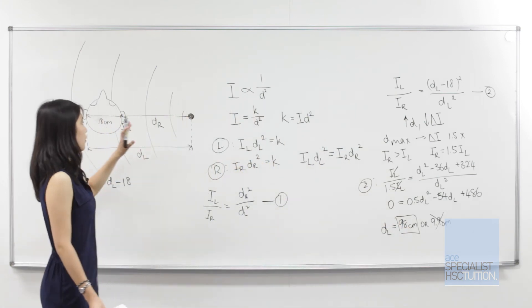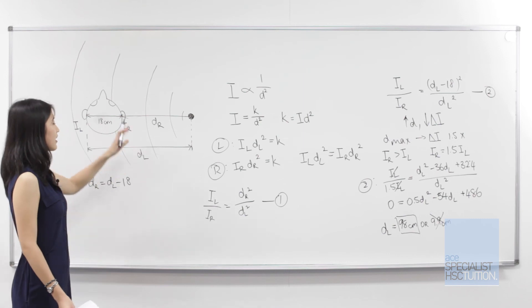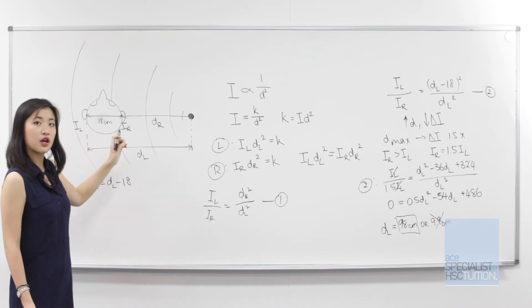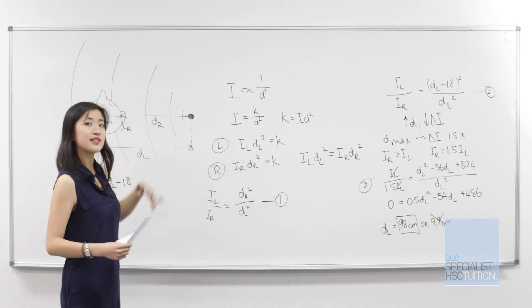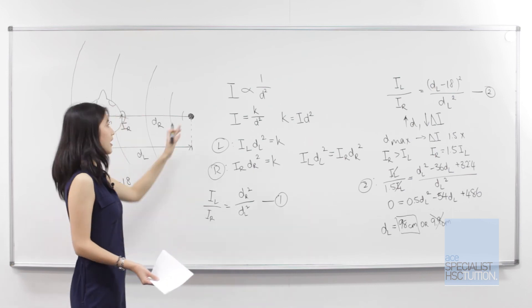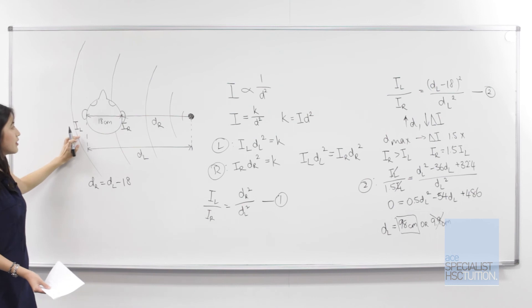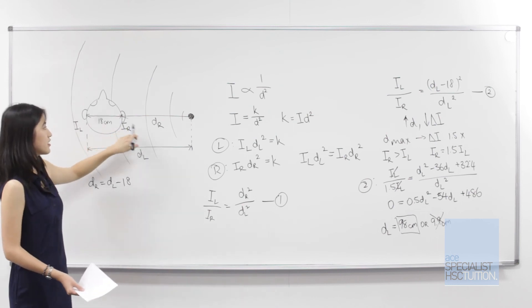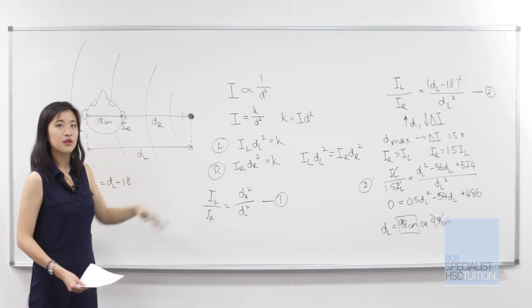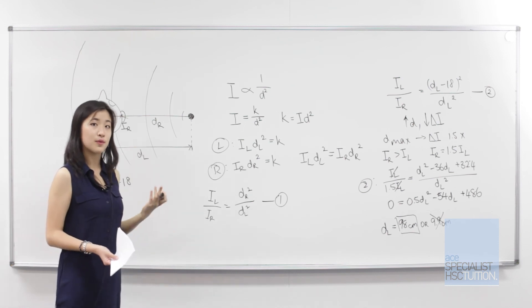So what we've discovered is that for the person to accurately determine that a sound from their right is indeed coming from their right, the sound source can be placed a maximum distance of 98 centimeters from their left ear and 80 centimeters from their right ear. Of course, this situation can also be reversed.